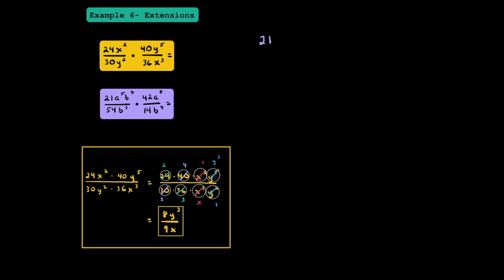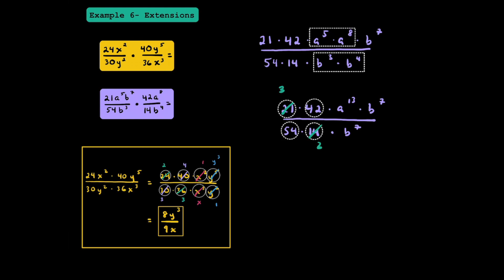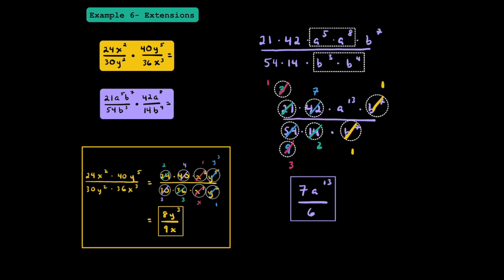Let's try one last one. Rearranging, we have 21 times 42 times a to the 5th times a to the 8th times b to the 7th in the numerator, and 54 times 14 times b to the 3rd times b to the 4th in the denominator. Combining exponents: a to the 5th times a to the 8th is a to the 13th, and b to the 3rd times b to the 4th is b to the 7th. Now, 21 and 14 are divisible by 7, giving 3 over 2. Then 42 and 54 divide by 6 to give 7 and 9. The 3 and 9 divide by 3 to give 1 and 3. Finally, b to the 7th cancels. The final answer is 7a to the 13th power over 6.